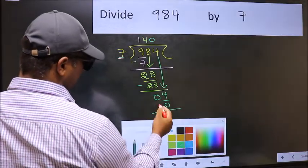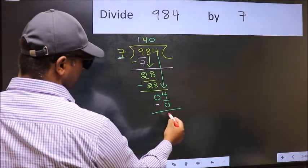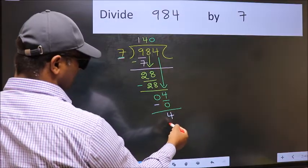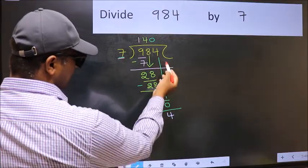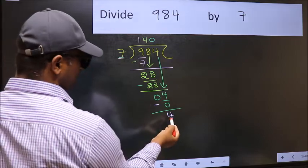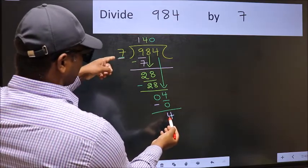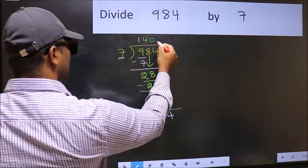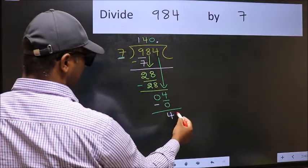Now you should subtract. 4 minus 0, 4. Over here, we did not bring any number down. And 4 is smaller than 7. So now you can put dot and take 0.